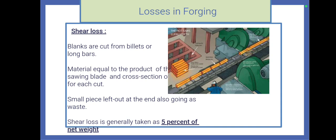During sawing, the material equal to the product of thickness of sawing blade and cross section of the bar is lost for each cut. This material loss is known as shear loss.